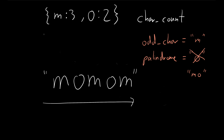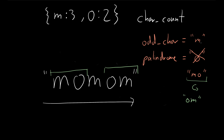So instead of just adding the letter directly, we divide the count by two and then add that many of the letter to palindrome. The reason is we're going to reuse this palindrome to create our string. Once we go through the whole dictionary, odd character holds the middle character, and palindrome represents the left-to-right half. So palindrome would be something like M-O, and then we reverse it to get O-M, and odd character goes in the middle.